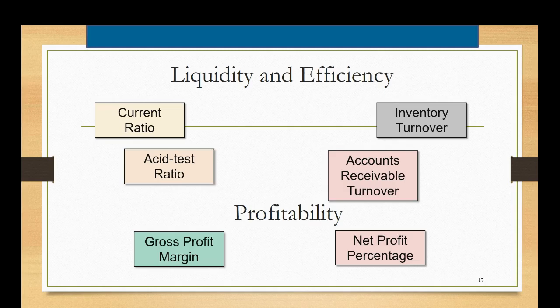In addition you'll be calculating two profitability measures. These were covered in accounting 100. The first one is called the gross profit margin and the second one is called the net profit percentage or the net profit margin. I've included some slides to refresh your memory before we start the Excel.